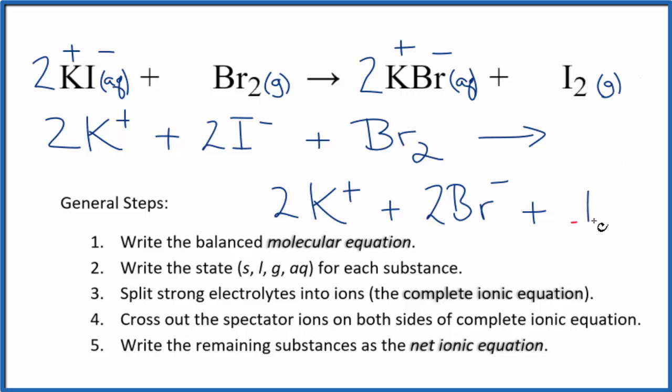For gases, we don't split those apart. It would just be I2. If it was aqueous, dissolved in water, because I2 isn't a strong electrolyte, it's two nonmetals here, it's not going to split apart into its ions. So if we had aqueous solution, even though it's dissolved, it's not a strong electrolyte, it would also be I2.